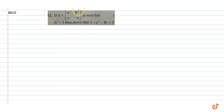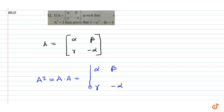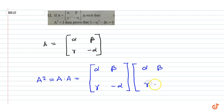Here we have A is equal to [α, β; γ, -α]. Now A squared is equal to A into A, equal to [α, β; γ, -α] multiplied by [α, β; γ, -α].